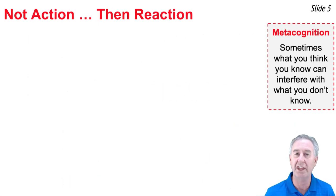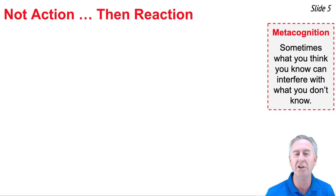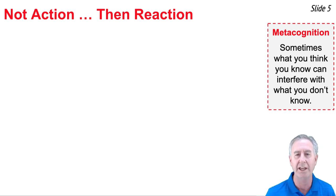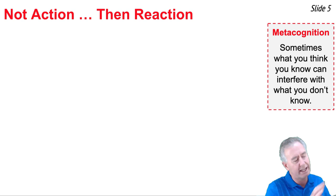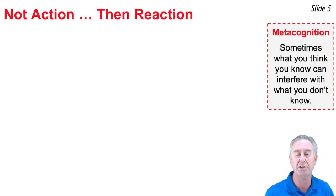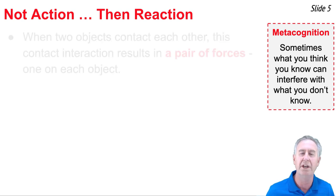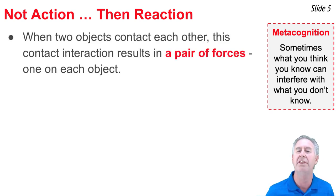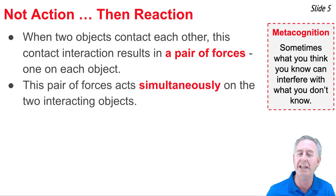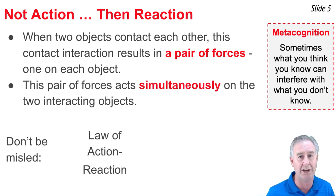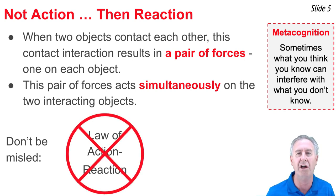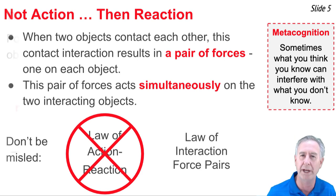In physics, the things we think we know can interfere with the things we don't know, and that may be the case with the Third Law. We often call this the Law of Action-Reaction, which gives the idea that there's some action taking place and then a reaction force as a consequence. But that's not what the Third Law means. The idea is that when two objects contact each other, there's a contact interaction that results in a pair of forces acting simultaneously on each object. It would be better to call this the Law of Interaction-Force Pairs.